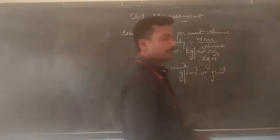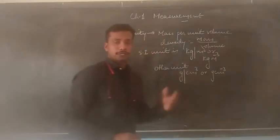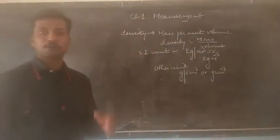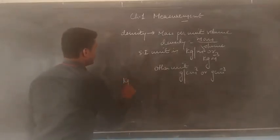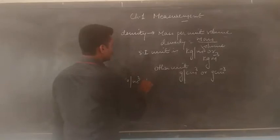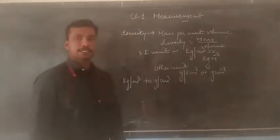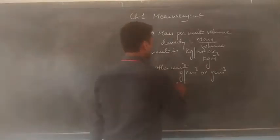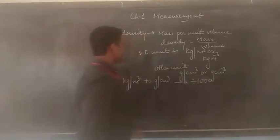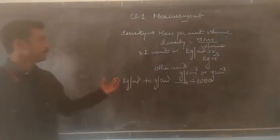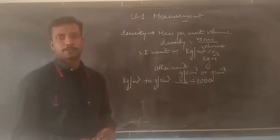One very important thing: how to convert kg per meter cube into gram per centimeter cube and vice versa. To convert kg per meter cube to gram per centimeter cube, we have to divide by 1,000. When you divide the number by 1,000, we can convert kg per meter cube into gram per centimeter cube.